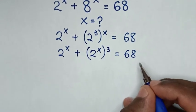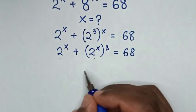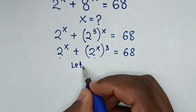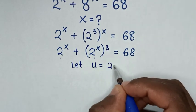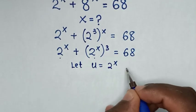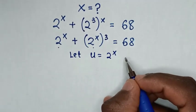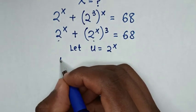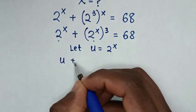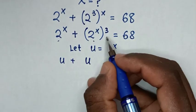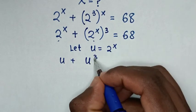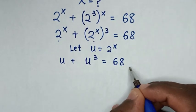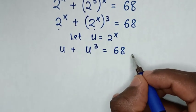Then in the next step, 2 power x is common, so we let u equal to 2 power x. Then in the next step, here we substitute u and here u, so it will be u plus u power of 3 is equal to 68.